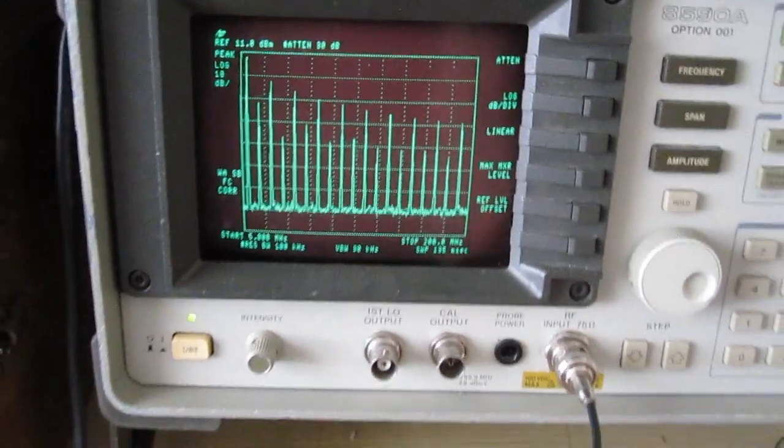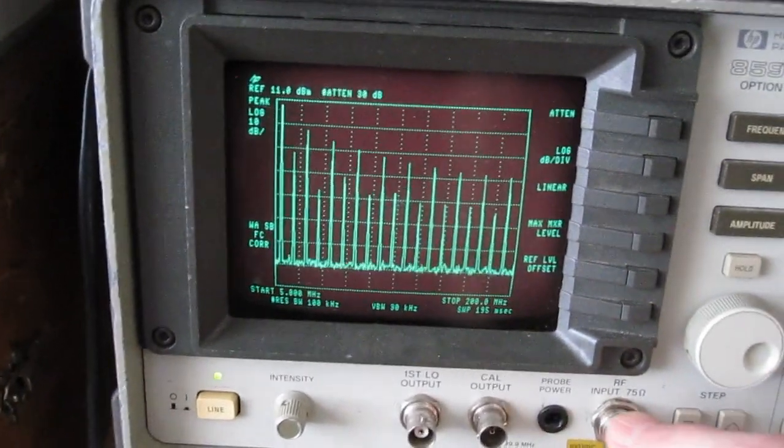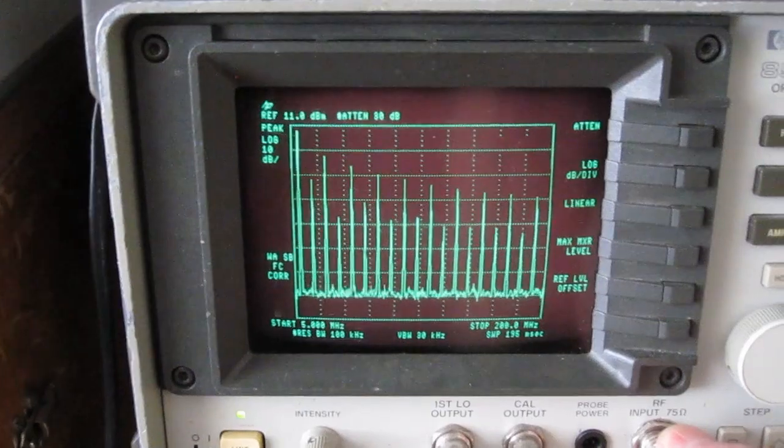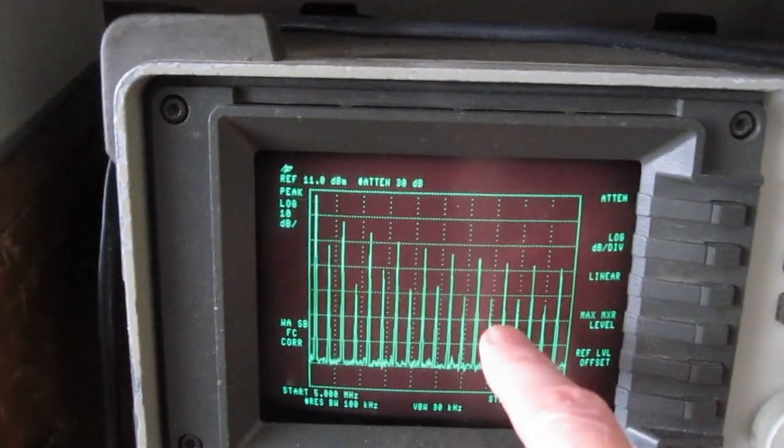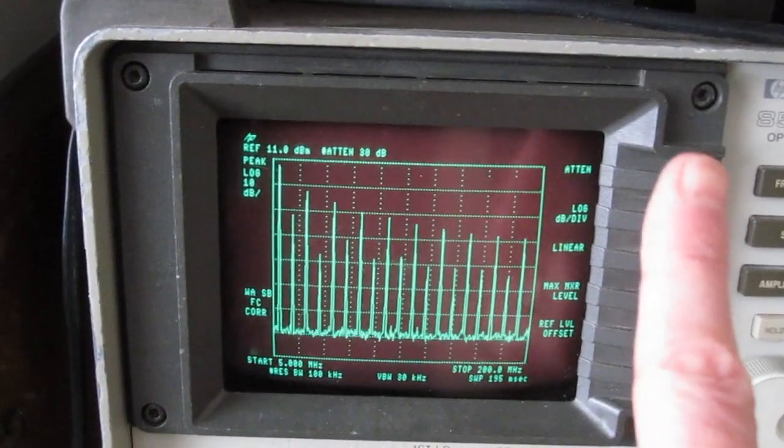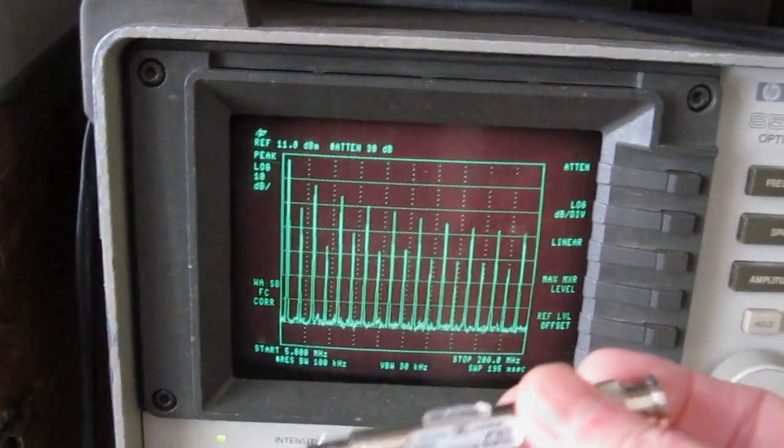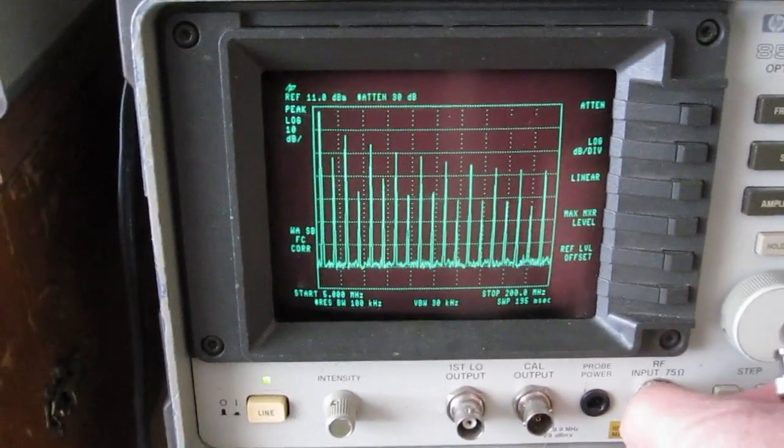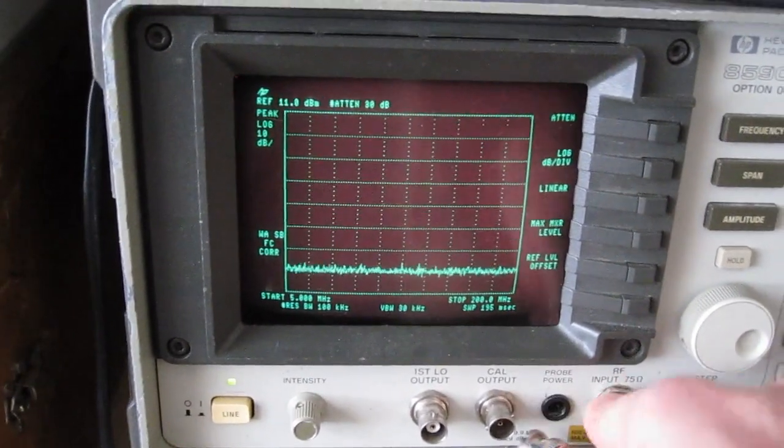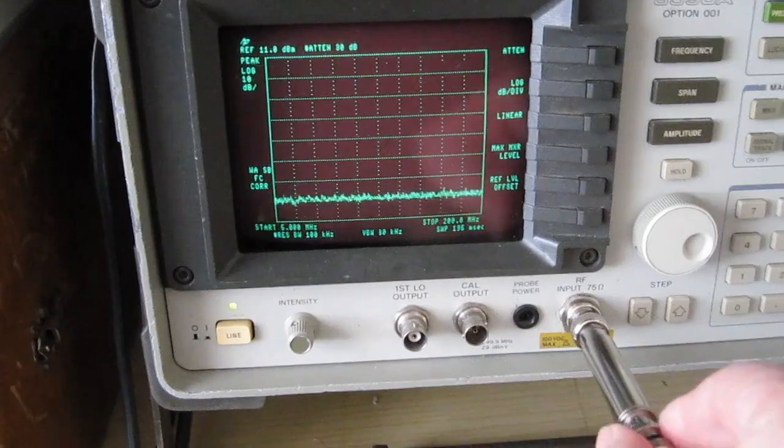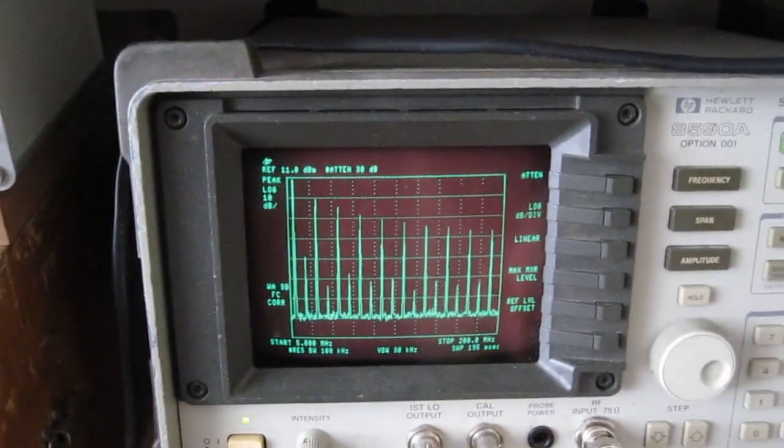Now I connected the thin coax cable to the RF input and the picture is of course the same as I shown in the other video, and when I now add this capacitor, what you see is indeed a reduction of the second harmonic.